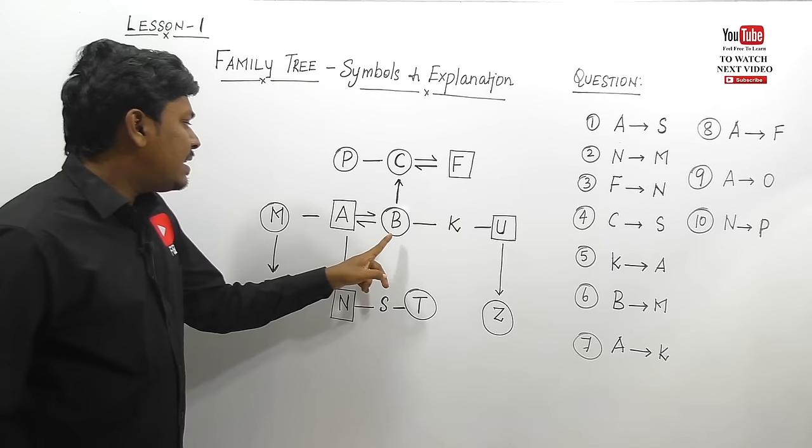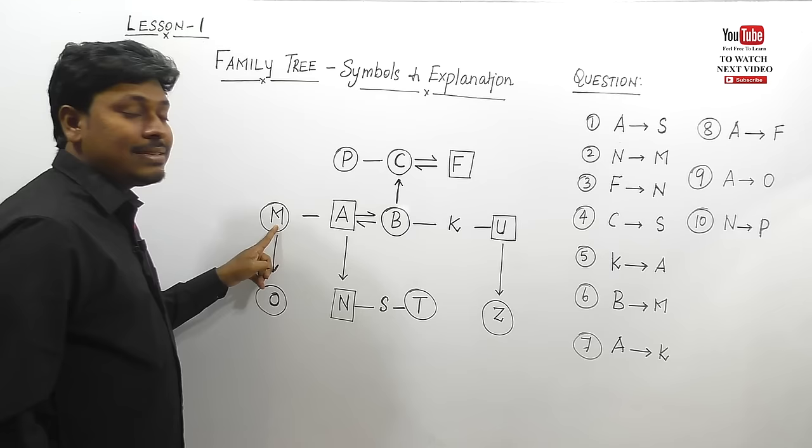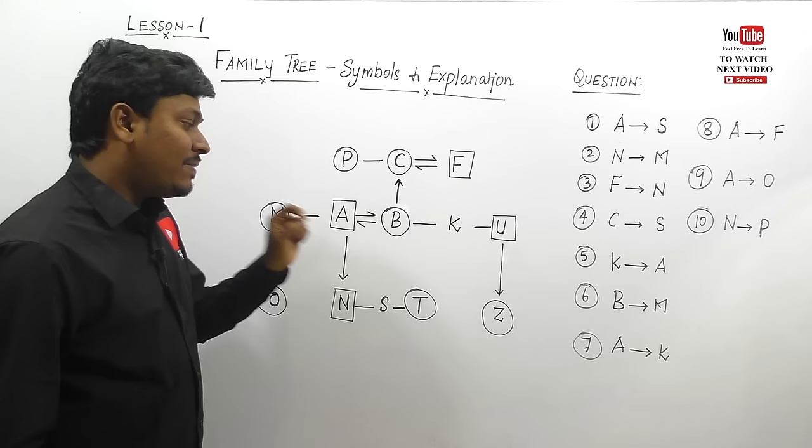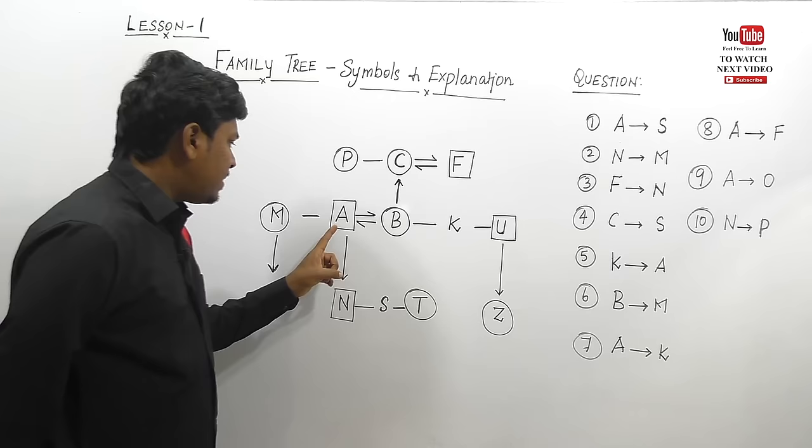Question 6: B to M — from B, what is the relation of M? B is having a husband A, and A is having a sister M. Husband's sister is called sister-in-law. So from B to M, the answer is sister-in-law.